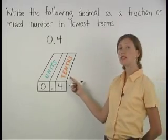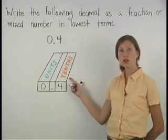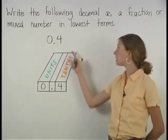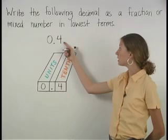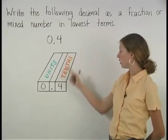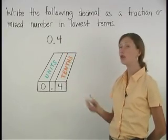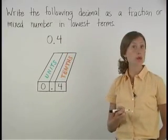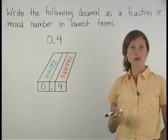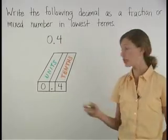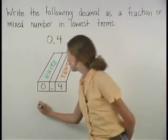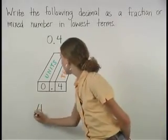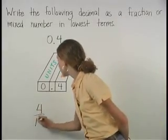Using the place value chart, we can see that the decimal 0.4 is 4 tenths. So we can write 0.4 as the fraction 4 out of 10.